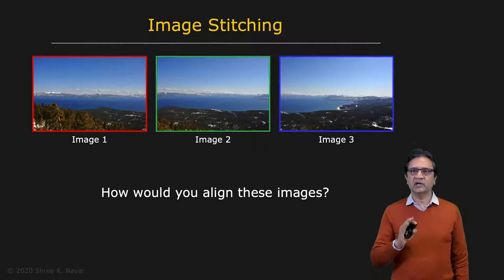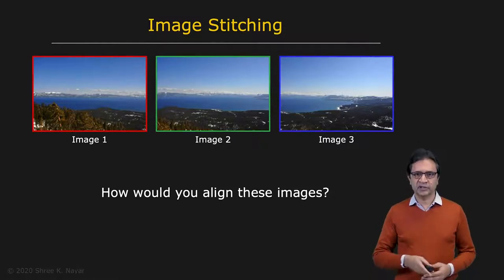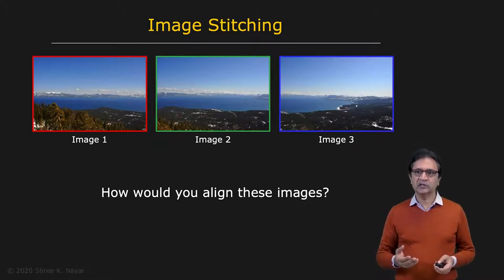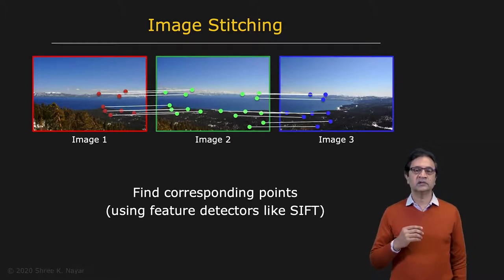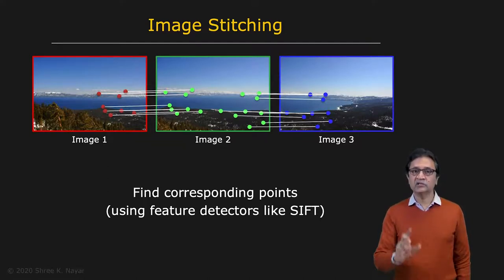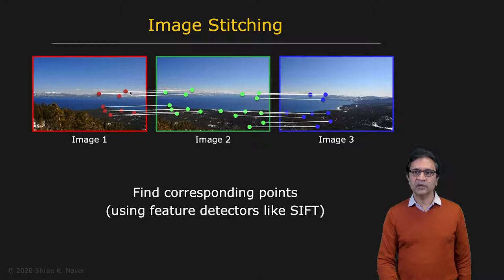Let's first talk about the problem itself. Imagine you've captured three images of a scene and you want to align them so you can stitch them together. The first step is to apply something like the SIFT detector to extract features. SIFT is perfect for this application. Then, based on the SIFT descriptor, you match features between images and come up with pairs of matching features — each white line corresponds to one such pair.